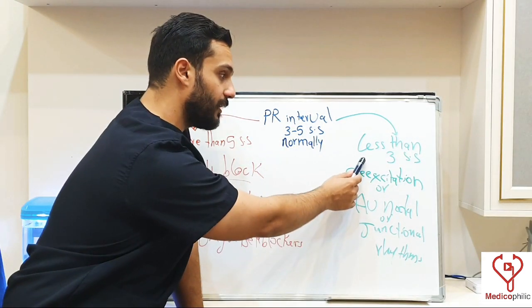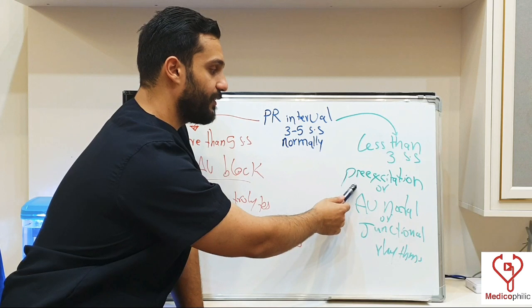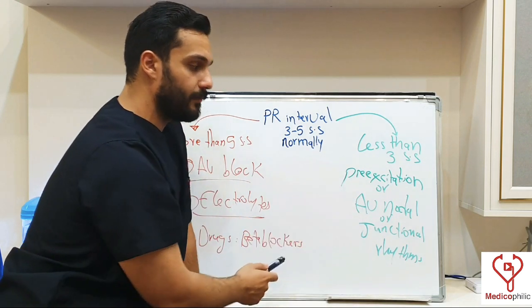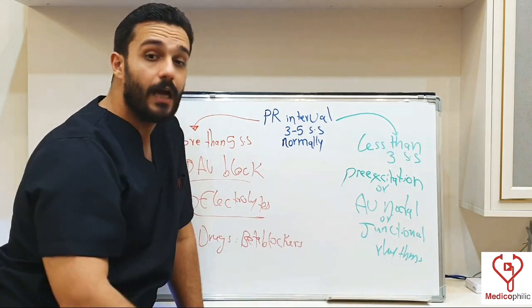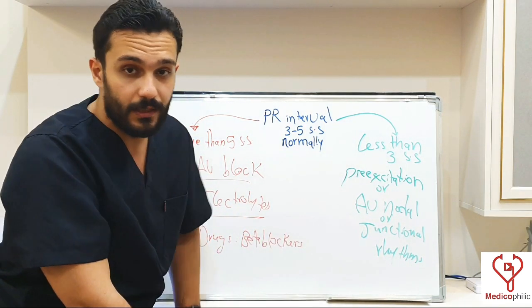And if the PR interval was less than 3 small squares, it's called short PR interval, due to pre-excitation rhythms, or junctional, or AV nodal rhythms. A common example is Wolff-Parkinson-White syndrome.